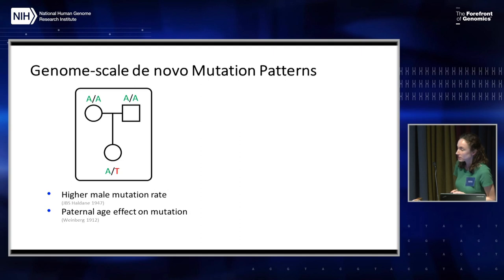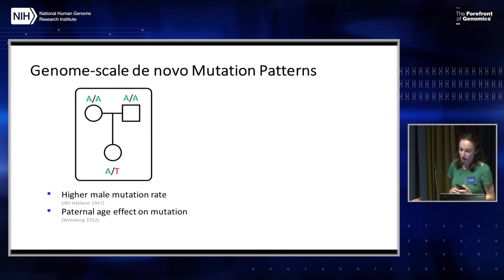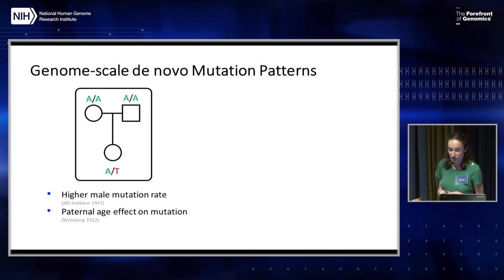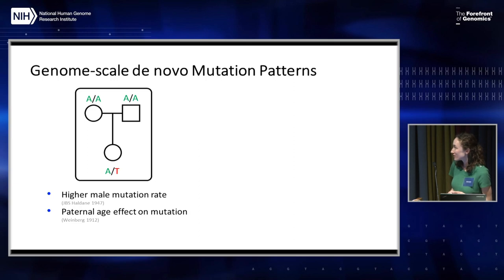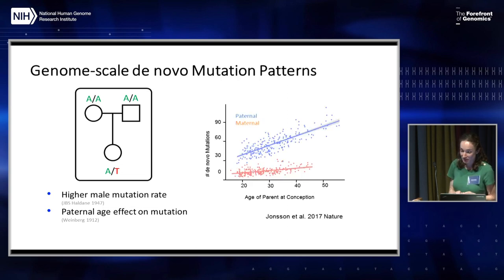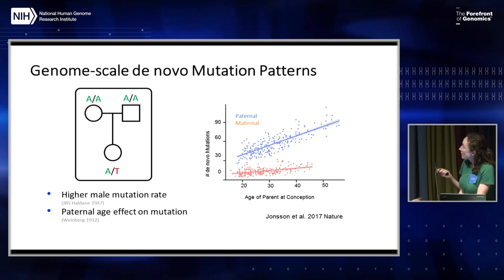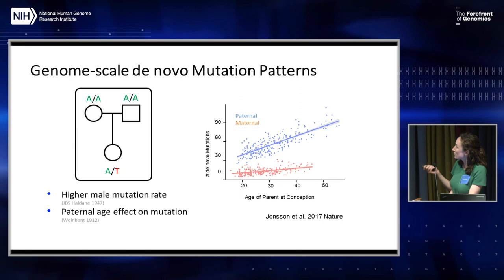Despite all of these challenges, the ease of whole genome sequencing has really sparked a lot of interest in understanding mutation and has allowed us to build on prior observations about mutational patterns. For example, more than 70 years ago Haldane presented some of the first evidence for a higher male mutation rate in humans, and more than a century ago Weinberg presented the first evidence for a paternal age effect. We now know these patterns are borne out genome-wide, as shown by data from a whole genome sequencing study of a large number of pedigrees in the Icelandic population, where there is a clear sex dimorphism and a pronounced effect of paternal age, with older dads transmitting more new mutations than younger dads.